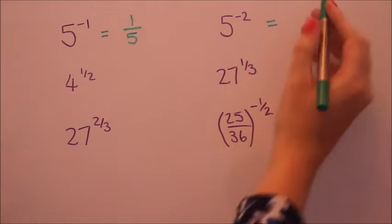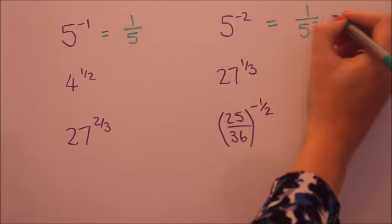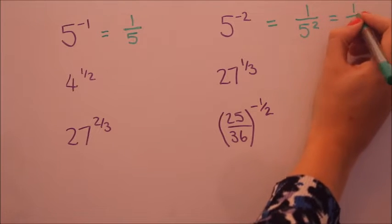So the negative is going to send the five down to the bottom of a fraction. If we have a negative two, that two will stay with the five at the bottom of the fraction. So it will be one over twenty five.